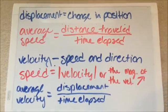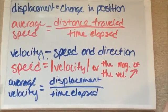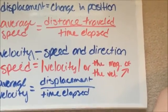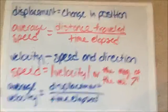Velocity is not just speed, but it's also direction. Thus, speed is the absolute value of velocity or the magnitude of the velocity vector. And average velocity is displacement over time elapsed.